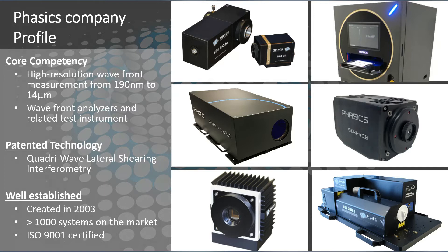We also provide custom solutions. For example, you can see here a dual-wavelength interferometer that works at two wavelengths simultaneously: one in the SWIR (shortwave infrared) around 1,500 nanometers and another around 2.3 microns. All of our products, including everything developed since 2003, are based on one technology called quadriwave lateral shearing interferometry.